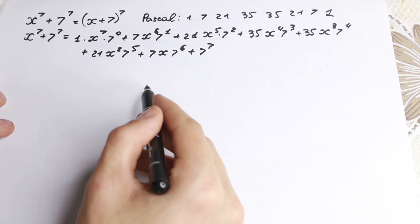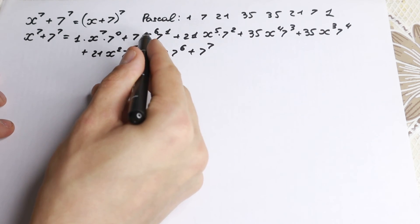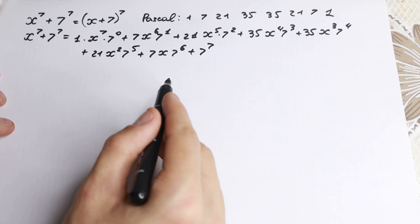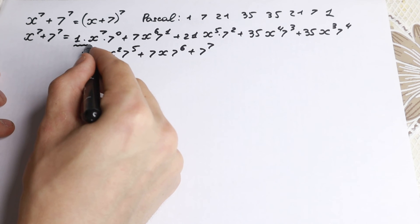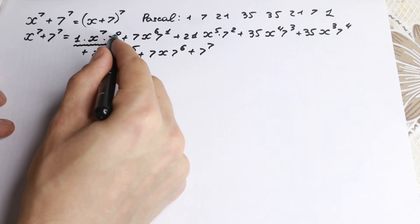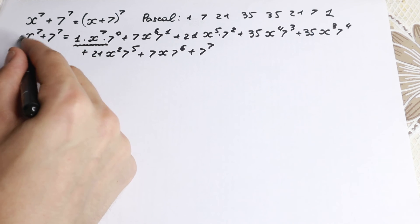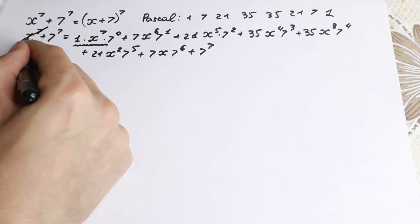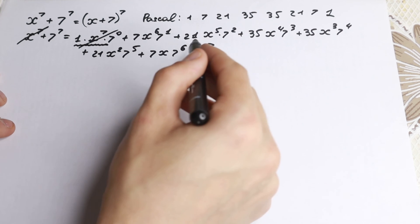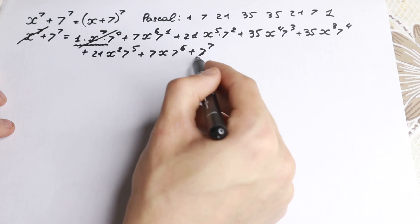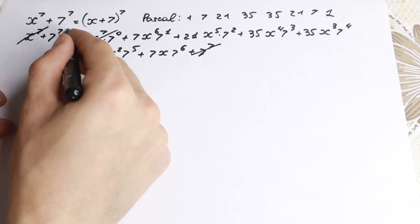So this is our expression raised to the 7th power using Pascal's triangle. If we look closely to the left hand side and right hand side, we can cancel x⁷ from both sides. Also, the last element 7⁷ on the right equals 7⁷ on the left, so we can cancel those as well. And finally we can simplify the remaining expression.